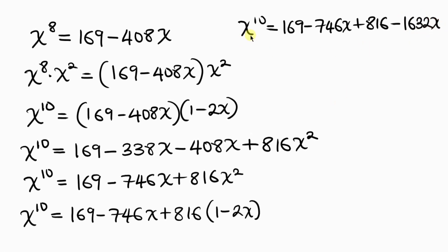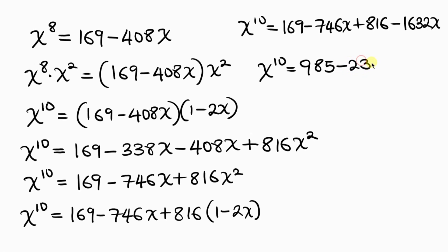Adding like terms, 169 plus 816 gives 985, and negative 746x minus 1632x gives negative 2378x. So x to the 10 equals 985 minus 2378x. But this is not our final answer.